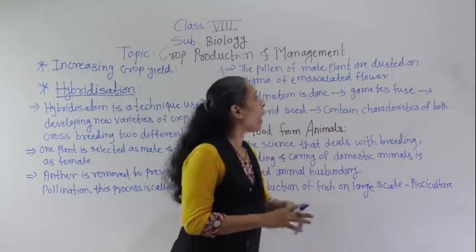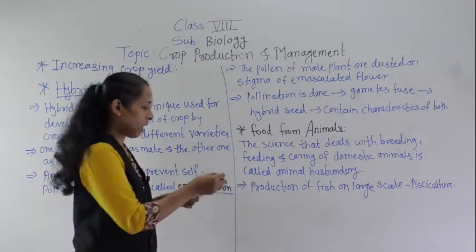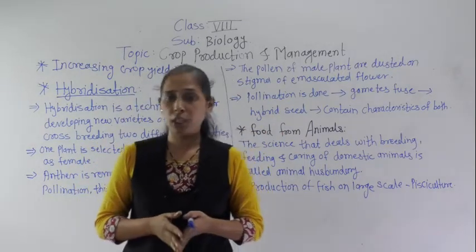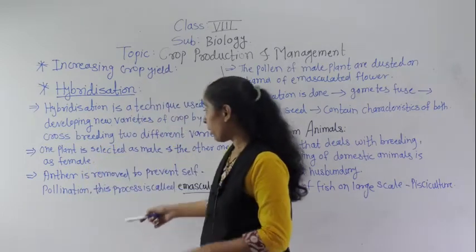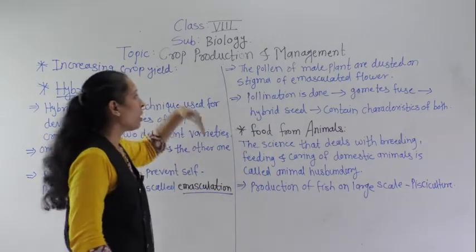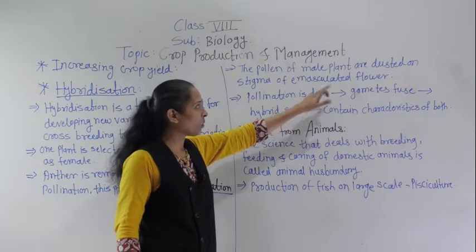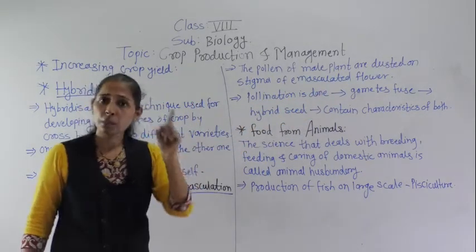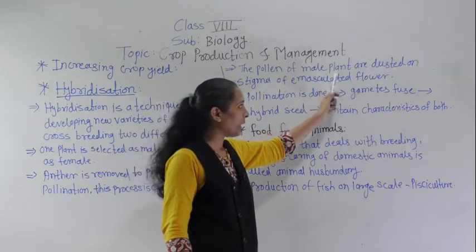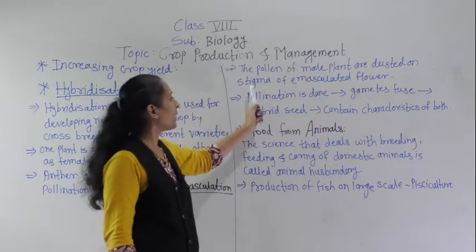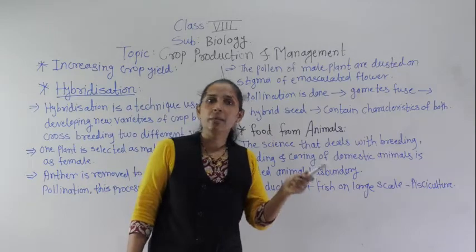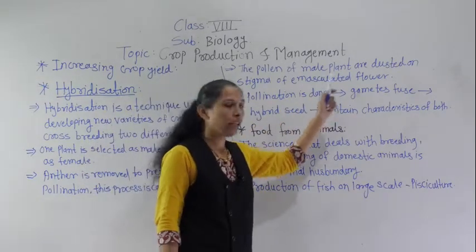The pollen of male plants are dusted on the stigma of the emasculated flower. Since we have stopped self-pollination, the pollination is done manually by dusting the pollen grains of the male plant onto the stigma of the emasculated flower. Once this process is complete, pollination occurs.